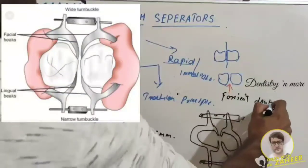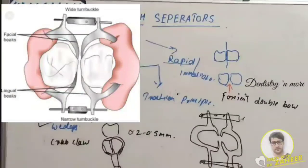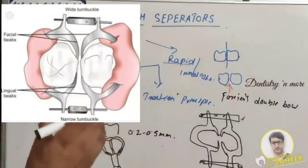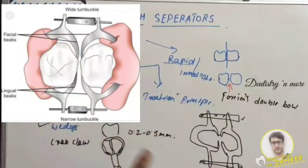Ferrier's double bow, because it has got two bows, employs a mechanical device to engage the proximal surfaces of contacting teeth and bodily moves them apart to bring about separation.